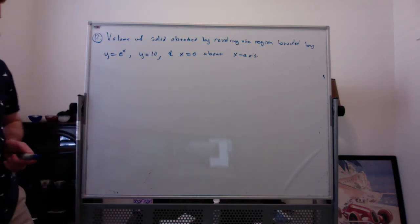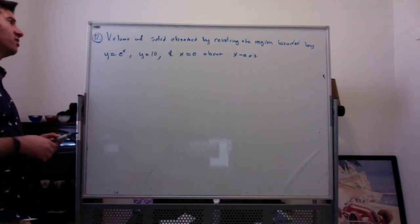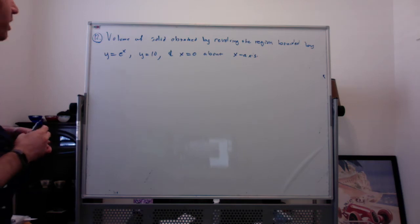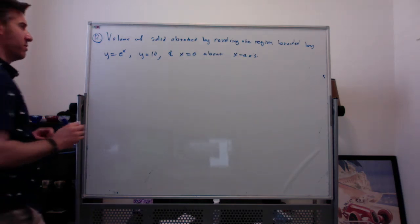Here's problem 12 from the midterm review for FAM. Find the volume of the solid obtained by revolving the region bounded by y equals e to the x, y equals 10, and x equals 0 about the x-axis.